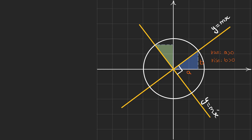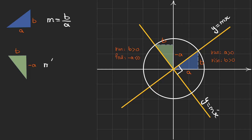So we can say the run is positive and the rise is also positive, so the slope is positive. And in the green right triangle, which is related to the second line, you can see that the run is B, which is positive, and the fall here is negative, so we show it by minus A. To find the slope for the first line, we write M equals B over A. But for the green one, it is minus A over B. If I multiply these two slopes, I can find that it's equal to minus one.